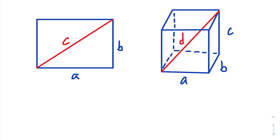But before we do that, let's look at this diagram right over here of a rectangle with side lengths A and B. Let's try and find the length of this diagonal, which is C. First of all, we know that this is a rectangle, so this is a right angle, which means this is a right triangle.